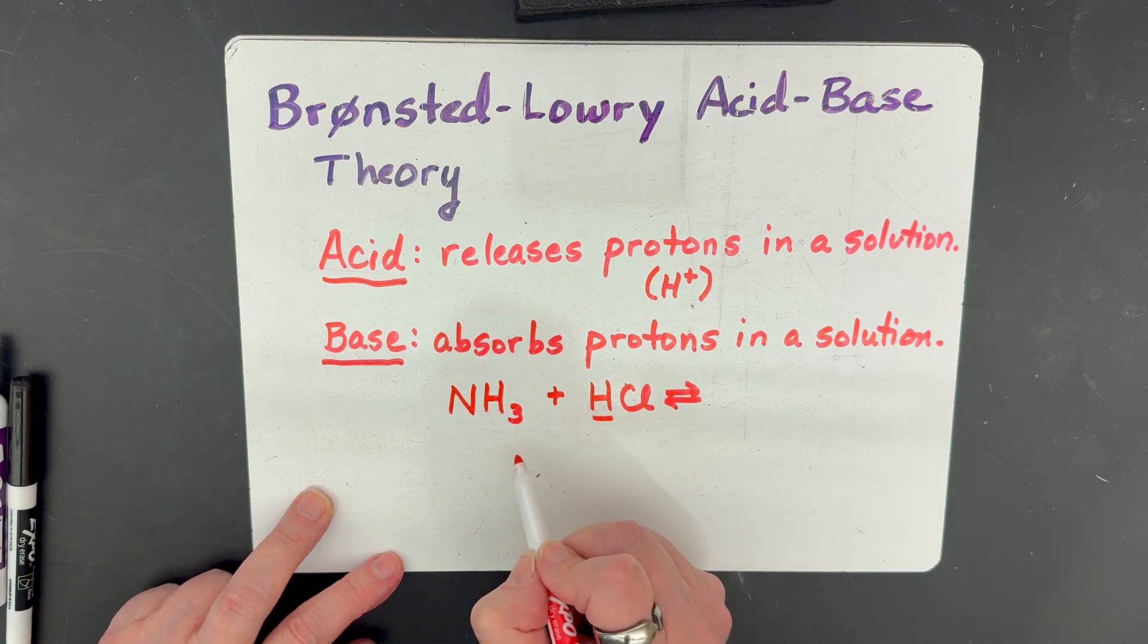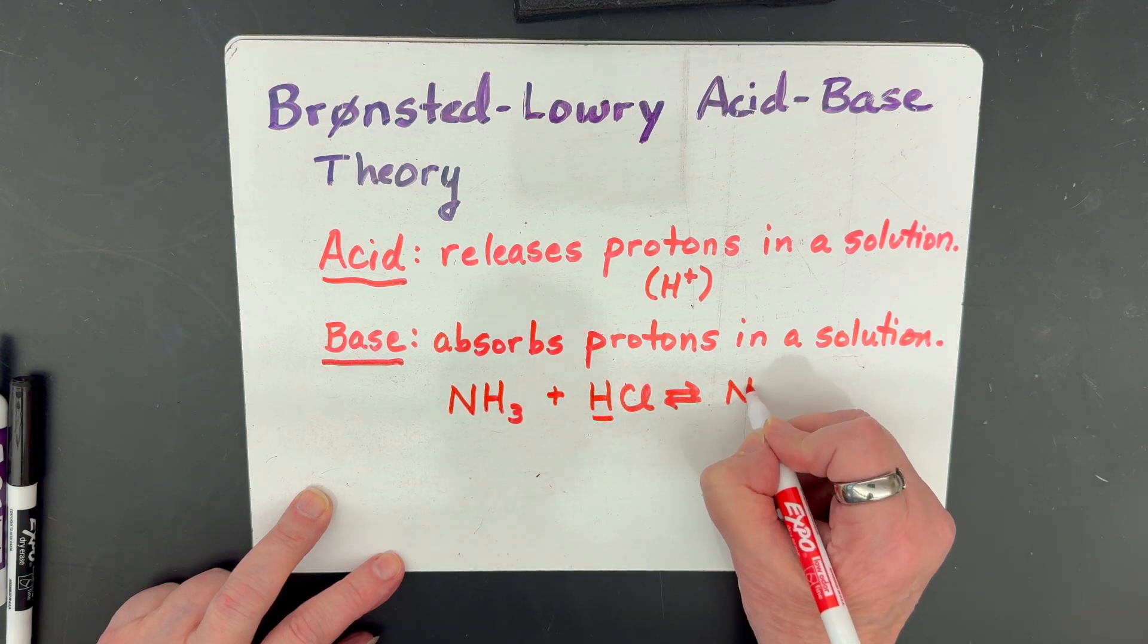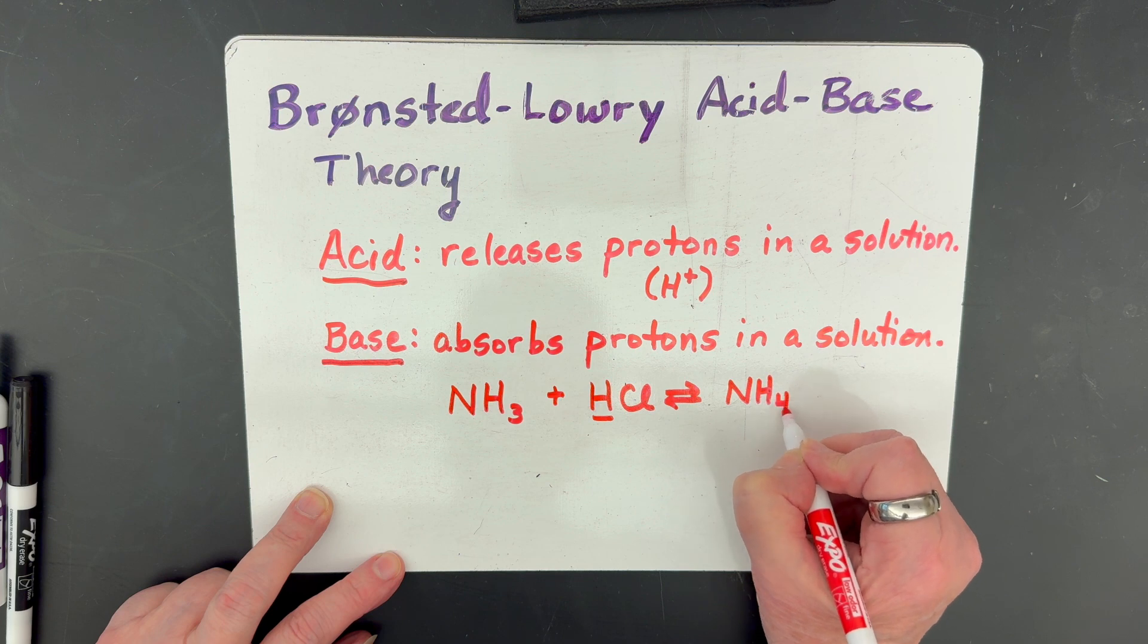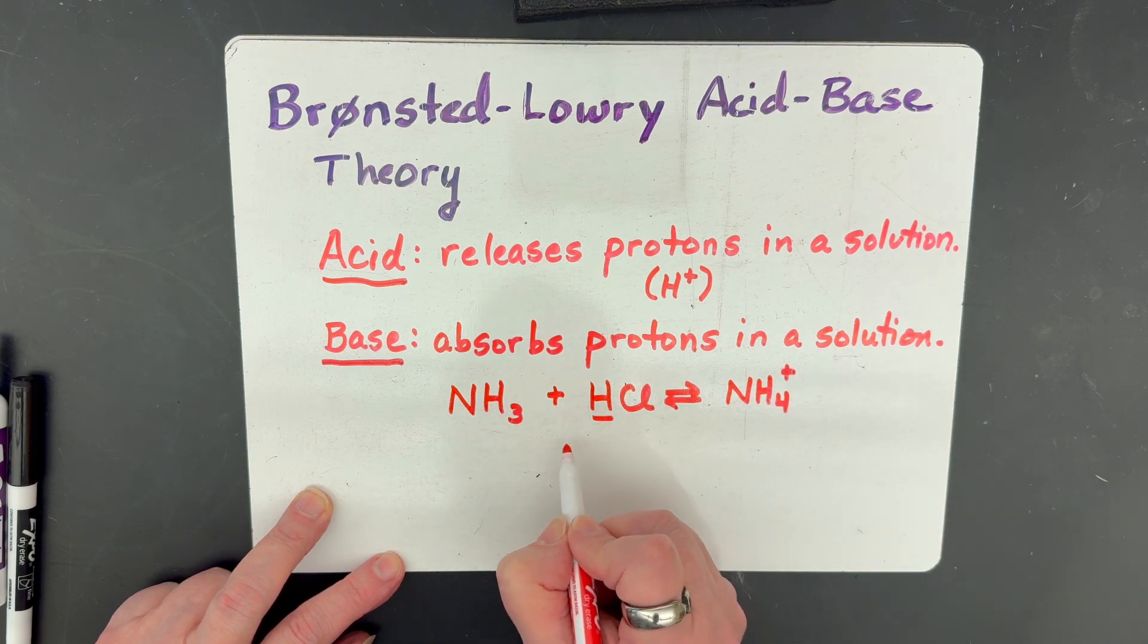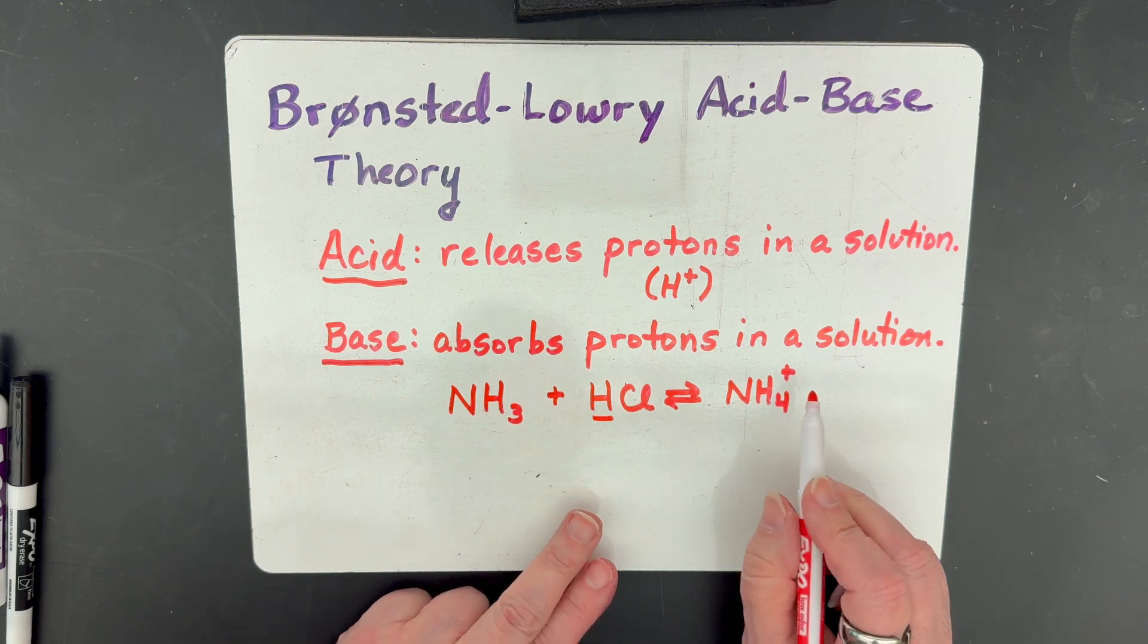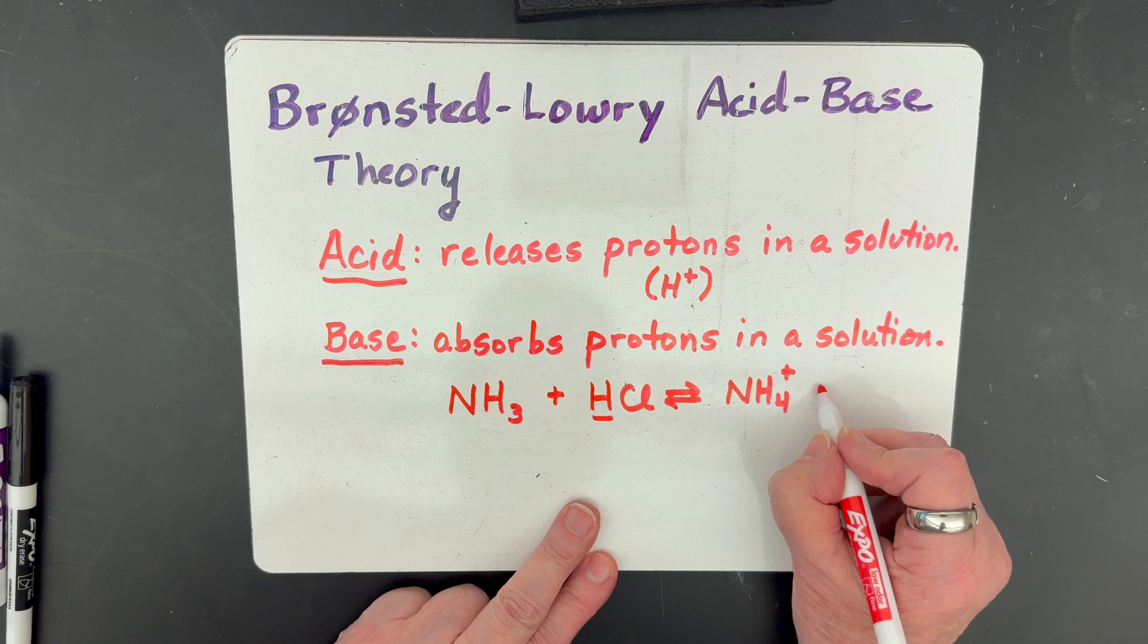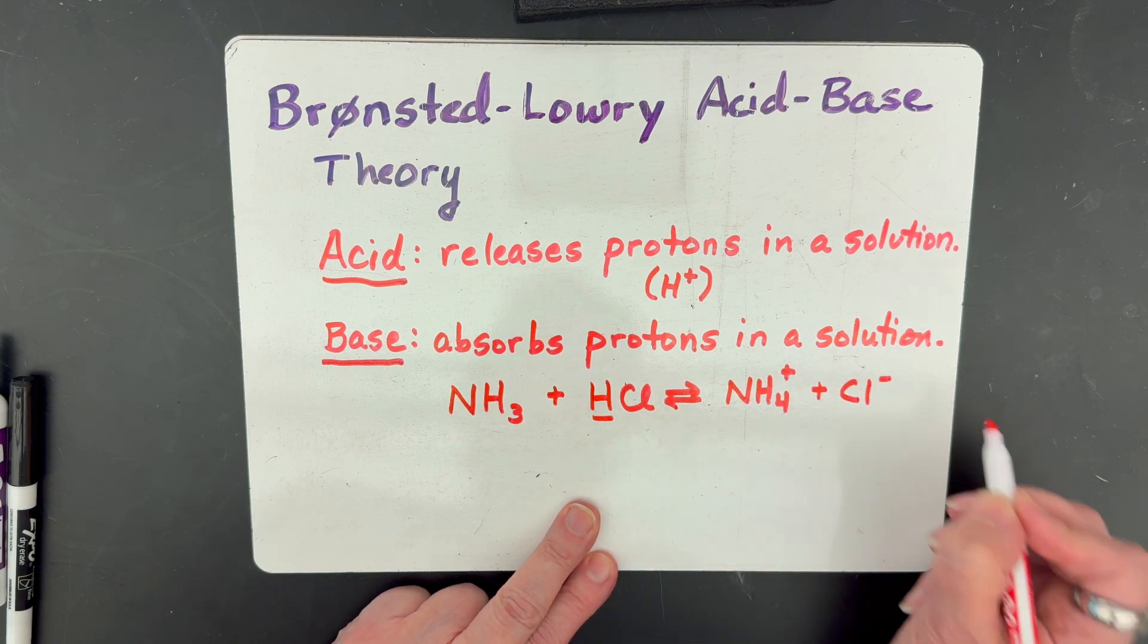And it's going to come over here and it's going to stick on that ammonia to become ammonium ion. So notice it was NH3, but now we stuck this hydrogen ion on there and it became NH4 with that positive charge from the ion. And what's left of the acid is just chloride ions.